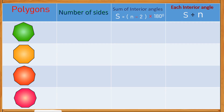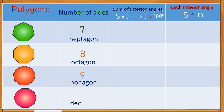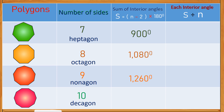Let's start by filling in the number of sides. The first figure is a 7-sided polygon, also called a heptagon. The next one has 8 sides, which is called an octagon. Followed by a 9-sided polygon, also known as a nonagon. The last figure is a decagon, which is a polygon with 10 sides. For the sum of interior angles: the heptagon is 900 degrees, the octagon is 1080 degrees, the nonagon is 1260 degrees, and the decagon is 1440 degrees.